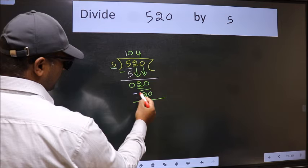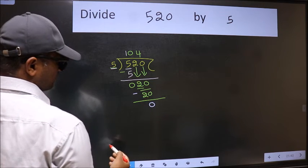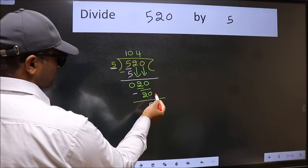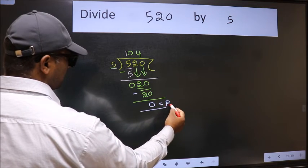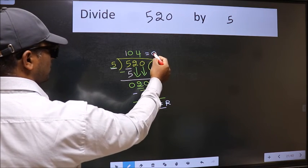Now we should subtract. We get 0. No more numbers to bring down. So we stop here. This is our remainder and this is our quotient.